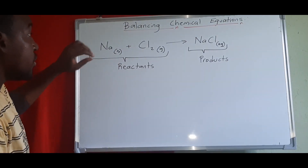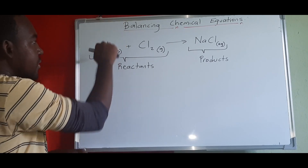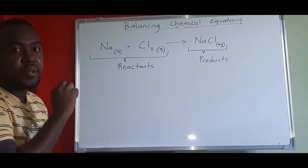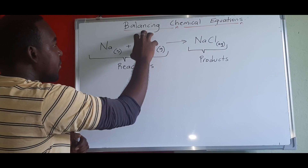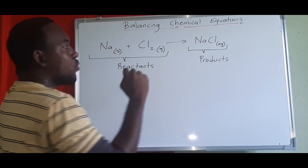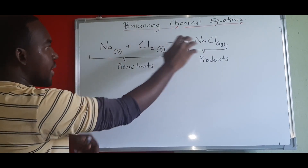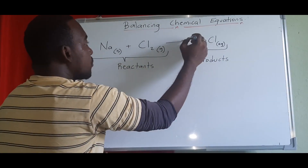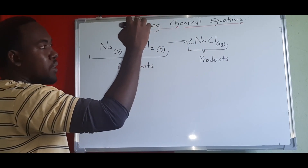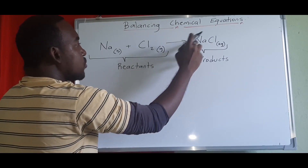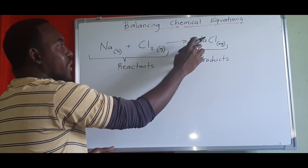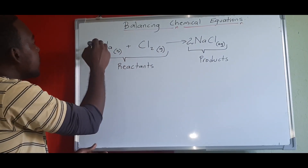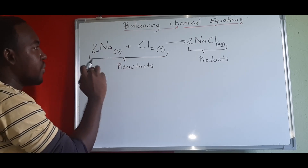So we have Na + Cl₂ → NaCl. On the left side we have one Na and over on the right side we also have one Na, so that's balanced. But on the left side we have two Cl and on the right side we only have one Cl. So we need to balance these — we put a 2 in front of NaCl. That means we now have two Cl, but it also changes the Na, so we put a 2 in front of Na on the left as well. Now we have two Na and two Cl on each side.